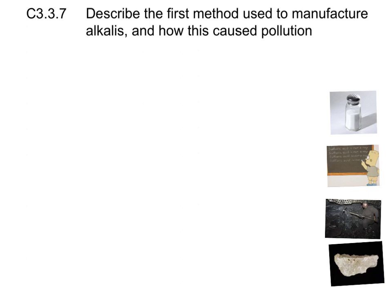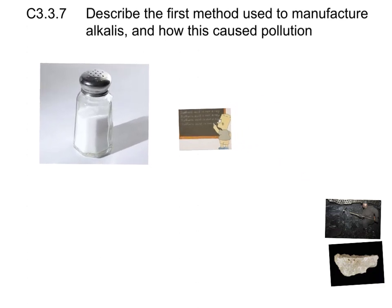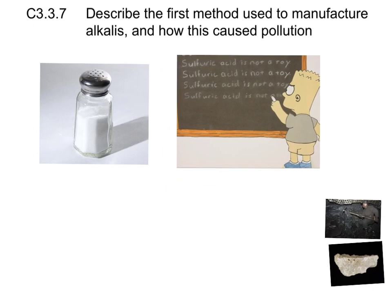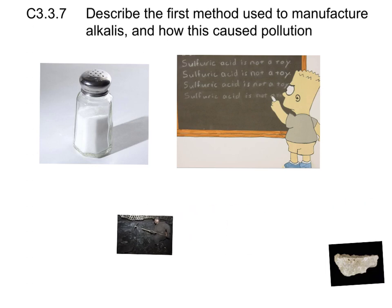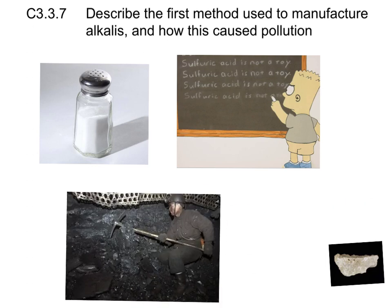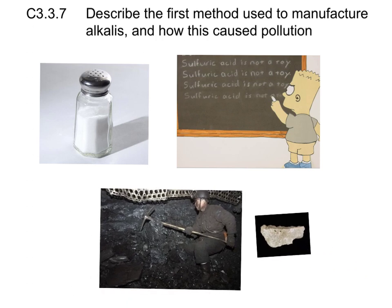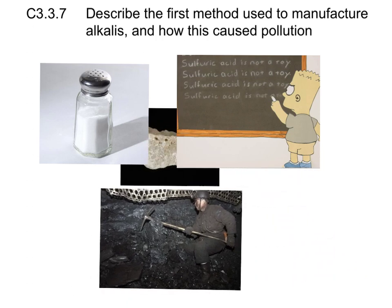The first method used to manufacture alkalis was called the Leblanc process. You needed, first of all, some salt or sodium chloride and some sulfuric acid. The Leblanc process reacted the salt with the sulfuric acid, and then you'd have to heat that mixture by burning coal. You'd also need to heat it with some limestone.